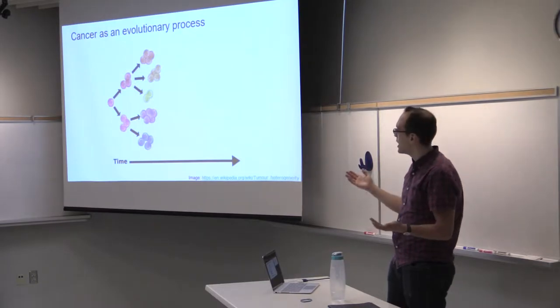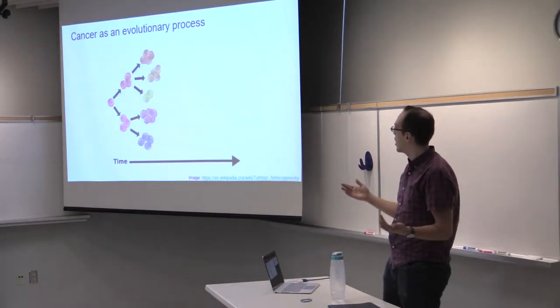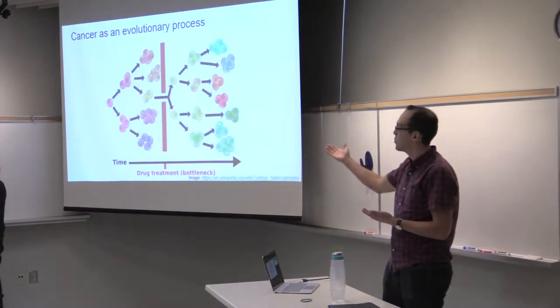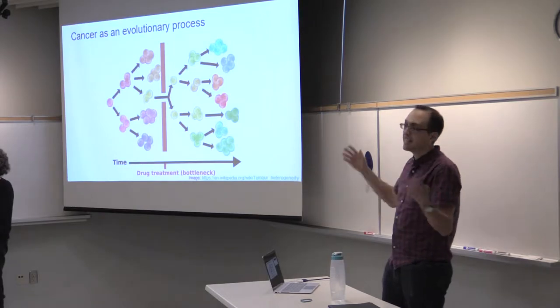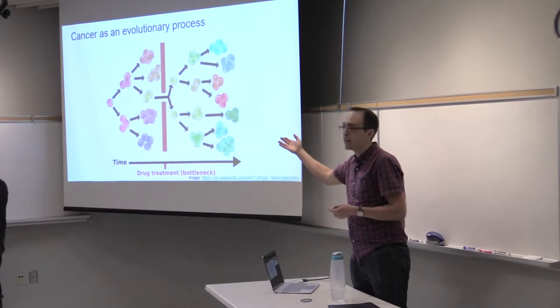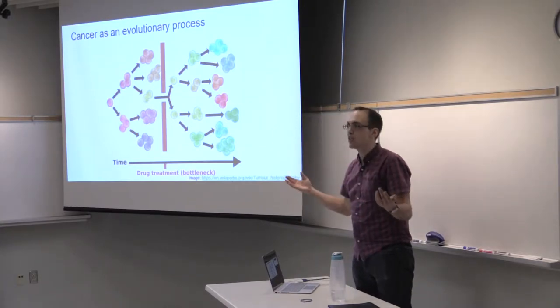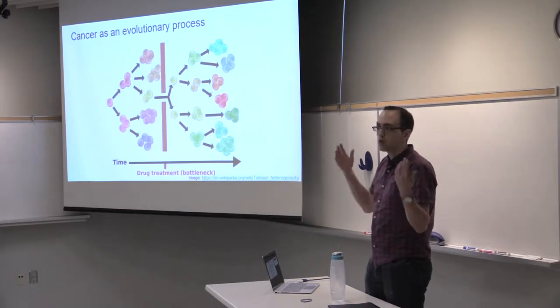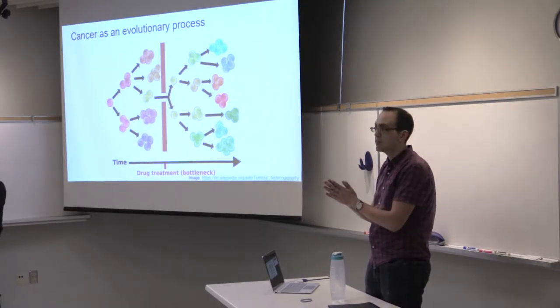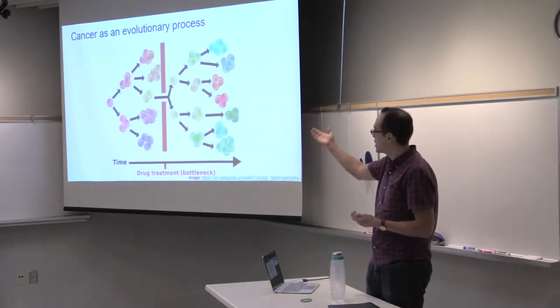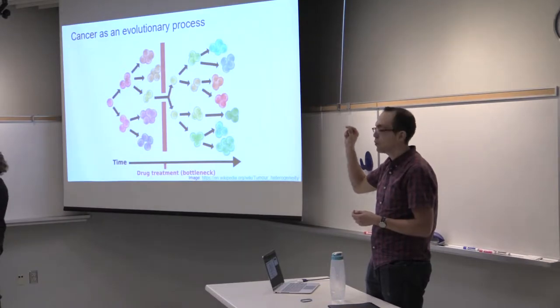This becomes particularly interesting in the context of treatment, because we can imagine applying some sort of bottleneck, like treating with a drug that can kill off 99% of the tumor. Maybe we kill off all the different populations of cells here except for the yellow set of cells, because just by chance they happen to have mutations granting resistance to this therapy before we apply it. The patient feels better, but returns in six months with relapse. The relapse is caused by that tiny set of cells that we left intact because we didn't know about them at the time of treatment.